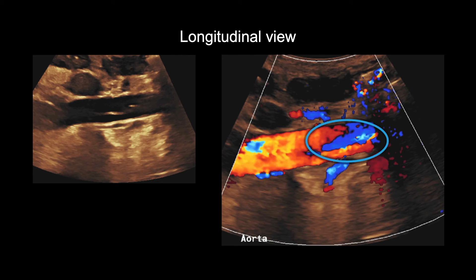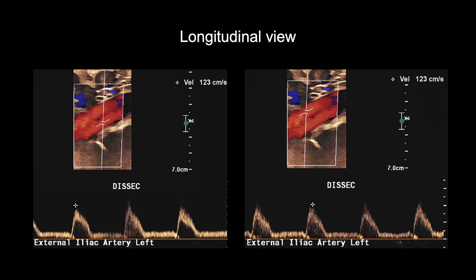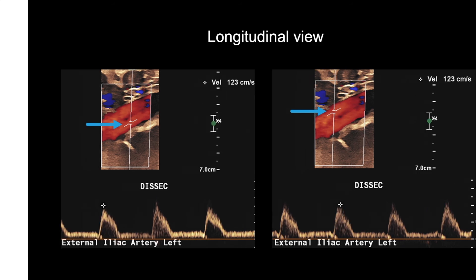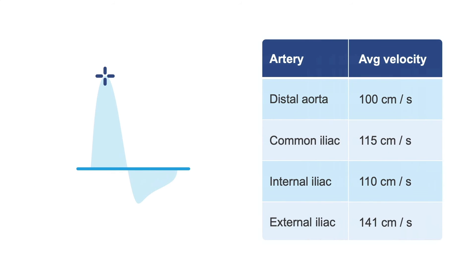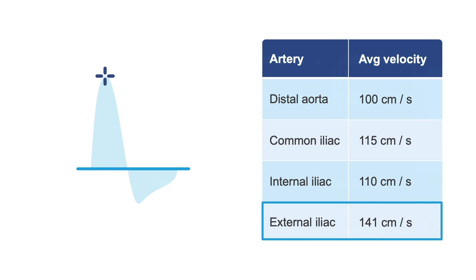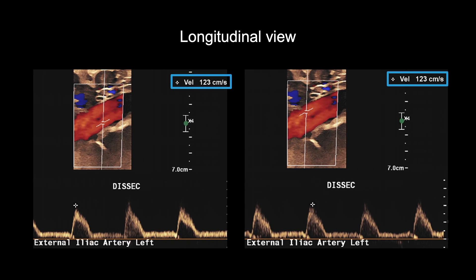As color is added, you can see the flow separation confirming the dissection flap. This separation of color is often seen in dissections on ultrasound. When encountering a dissection, document peak systolic velocities on either side of the bright line in longitudinal to be sure that they are not elevated. This would indicate a hemodynamically significant stenosis affecting blood flow to the organs and legs. The normal average velocity in the external iliac artery is 141 centimeters per second, so at 123 centimeters per second, these images show no significant velocity elevations.